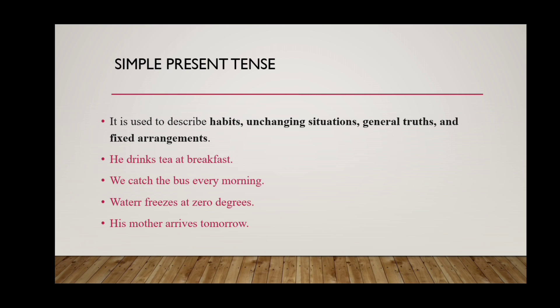When do we use simple present tense? We use it to describe habits, unchanging situations, general truth or universal truth, and fixed arrangements. For example: 'He drinks tea at breakfast' — this is a habit. 'We catch the bus every morning' — this can be a habit or unchanging situation. 'Water freezes at zero degrees' — this is general and universal truth.